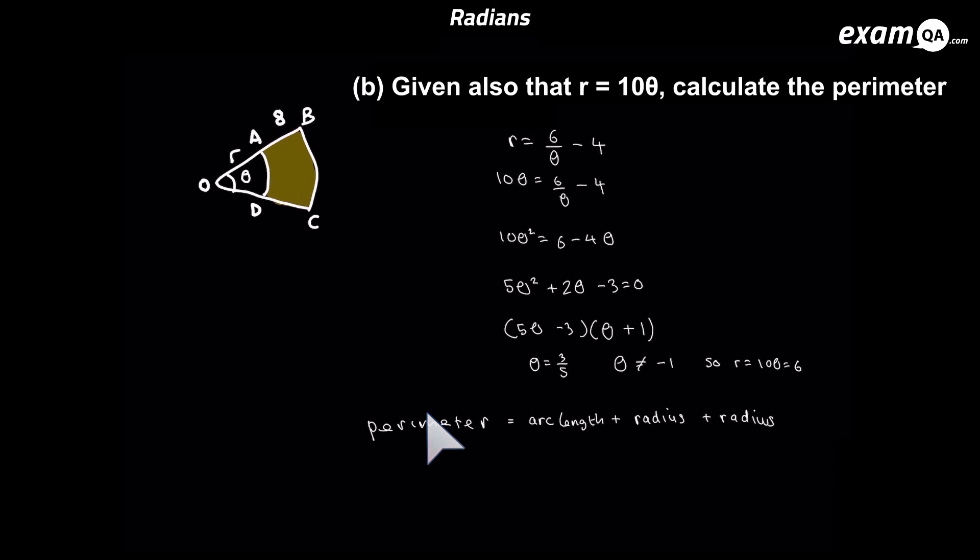So the perimeter of the larger sector is going to be the arc length plus the radius and plus the radius again. So this time we've used the arc length formula, and you should know that's r times theta. Of course, in this case, the r is actually r plus 8, as the radius is r plus 8. So it's r plus 8 times theta for the arc length. And we plus the radius twice. So it's plus r plus 8 plus r plus 8 again.